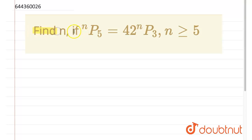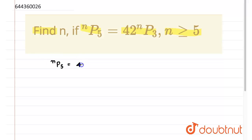Find n if nP5 is equal to 42 times nP3, and n is greater than or equal to 5. We are given that nP5 is equal to 42 times nP3, and we have to find the value of n.